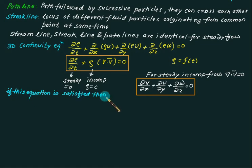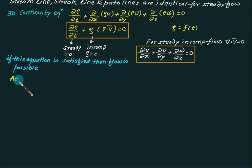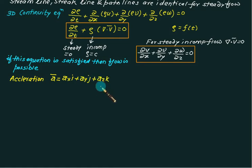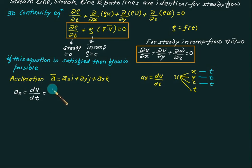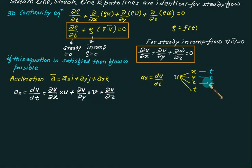The acceleration vector for a fluid particle has three components ax, ay, az, written as ax·i + ay·j + az·k. Acceleration ax = Du/Dt, where u is a function of x, y, z for non-uniform flow and a function of t for unsteady flow. Using the chain rule: ax = (∂u/∂x)(∂x/∂t) + (∂u/∂y)(∂y/∂t) + (∂u/∂z)(∂z/∂t) + ∂u/∂t = u(∂u/∂x) + v(∂u/∂y) + w(∂u/∂z) + ∂u/∂t.